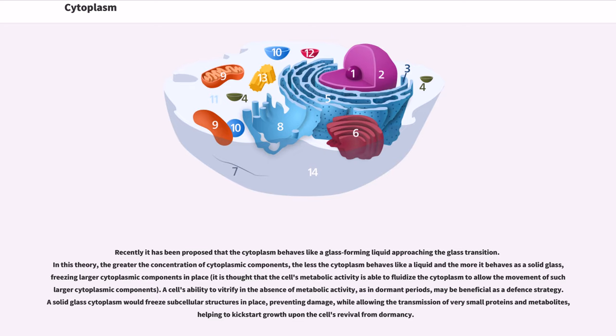A cell's ability to vitrify in the absence of metabolic activity, as in dormant periods, may be beneficial as a defense strategy. A solid glass cytoplasm would freeze subcellular structures in place, preventing damage, while allowing the transmission of very small proteins and metabolites, helping to kickstart growth upon the cell's revival from dormancy.